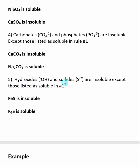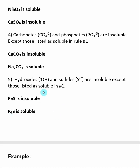Lastly, Rule 5 states that hydroxides and sulfides are considered insoluble, except for those listed as soluble in Rule 1. Iron(II) sulfide is insoluble — iron is not mentioned in Rule 1, so iron(II) sulfide is insoluble. However, potassium sulfide is soluble because potassium is mentioned in Rule 1 as a Group 1 metal.